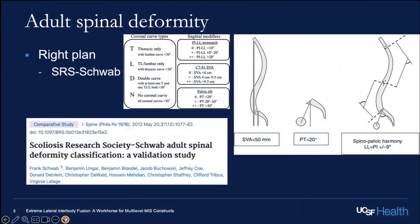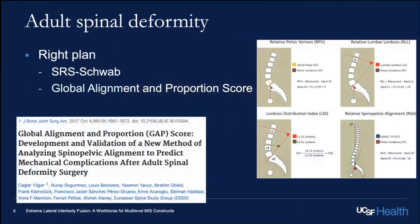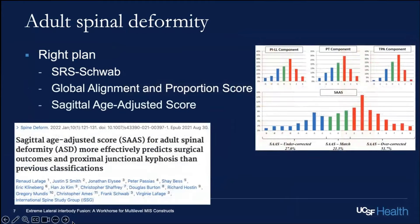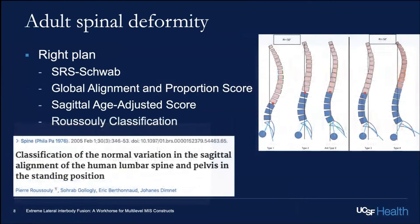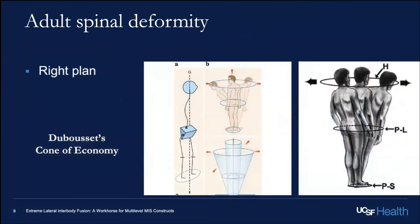There are multiple classification systems — SRS Schwab, GAP, and the newest one from ISSG, the Sagittal Age-Adjusted Score that combines SRS Schwab and GAP, and of course Roussouly. All these are quantifications or descriptions of how to capture the original Dubousset concept that your head should be above your shoulders, above your pelvis, all the way down.